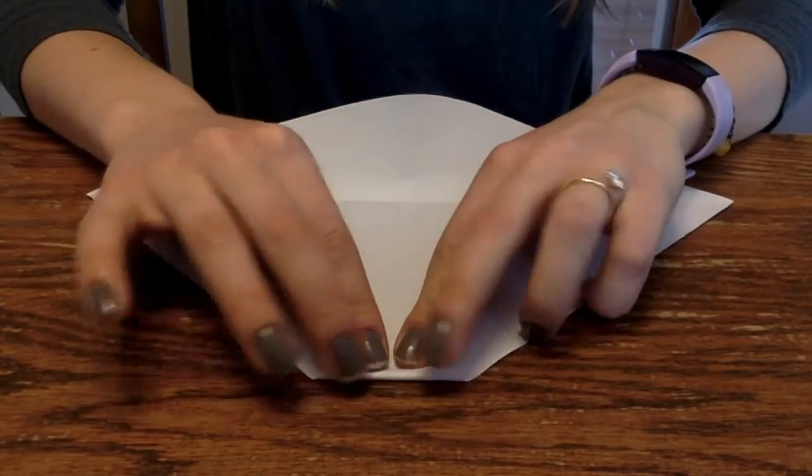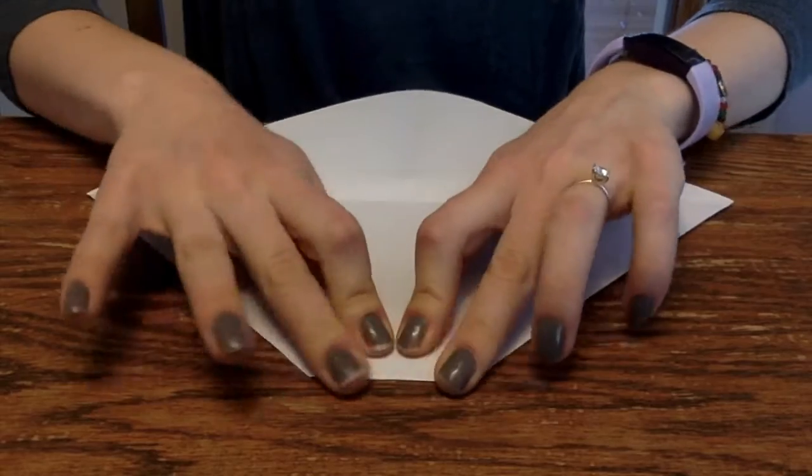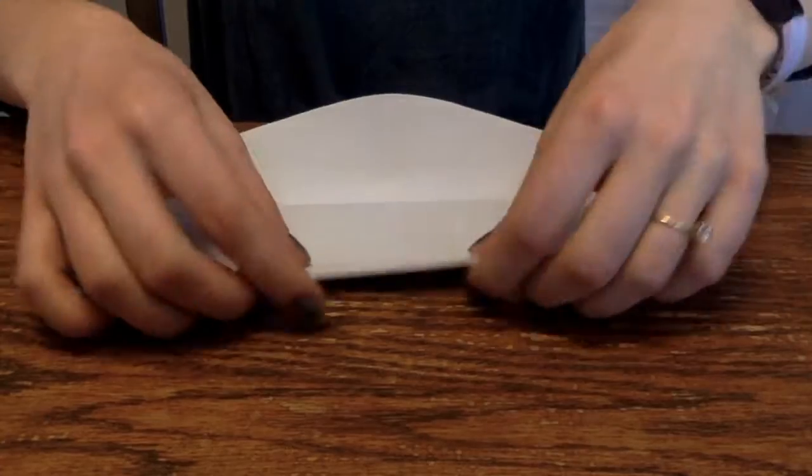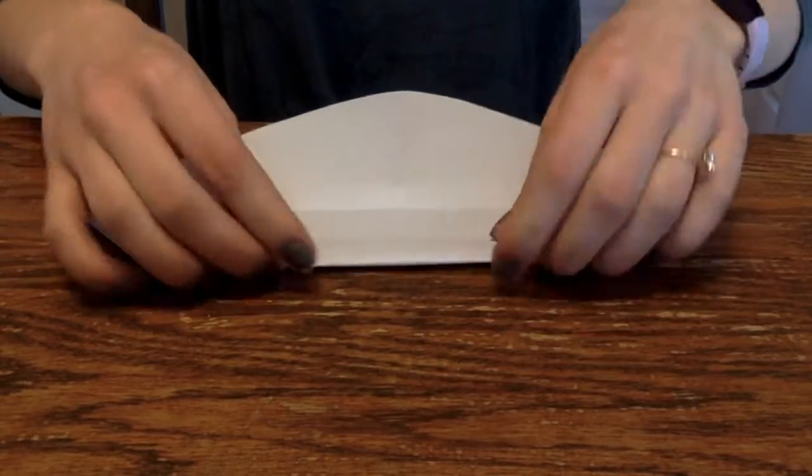Next fold one corner over to make a one centimeter thick fold. Fold this one over again and keep doing this until you have folded the entire half into one rectangle.